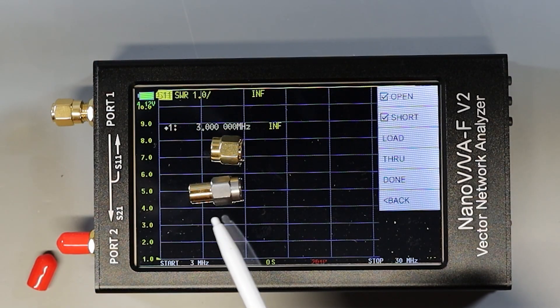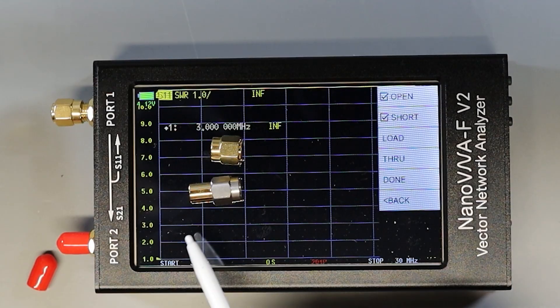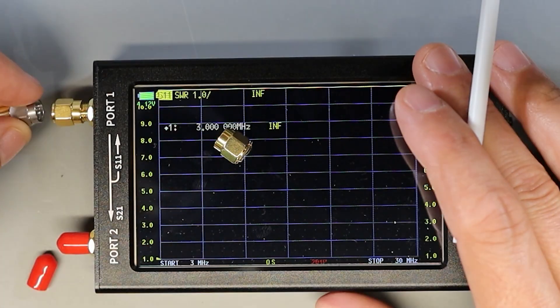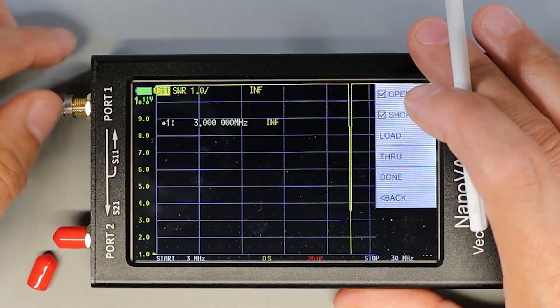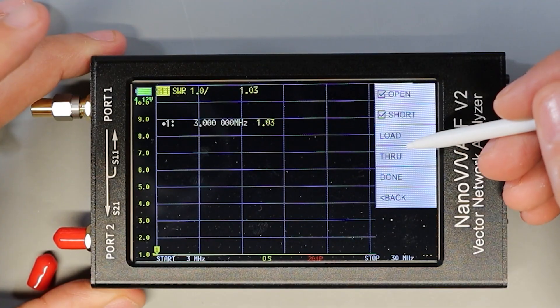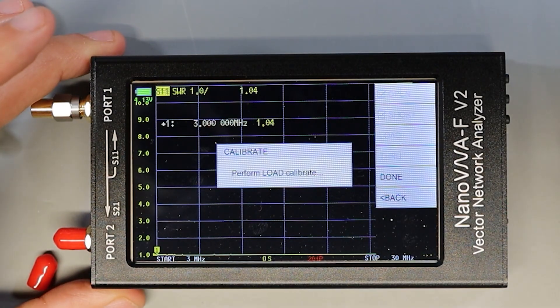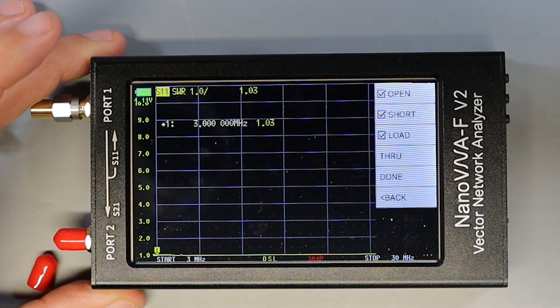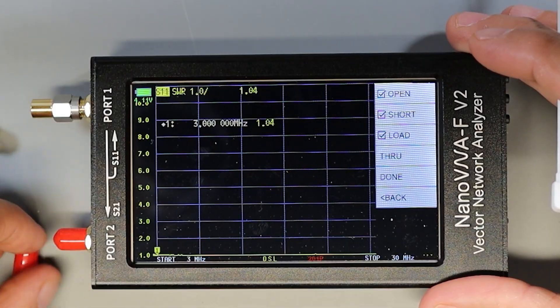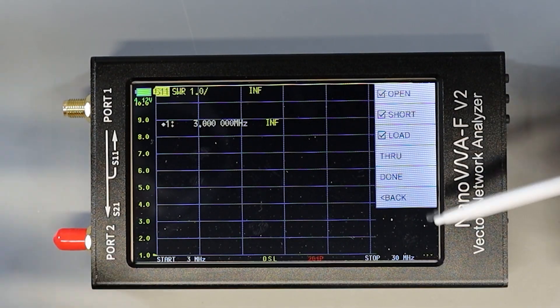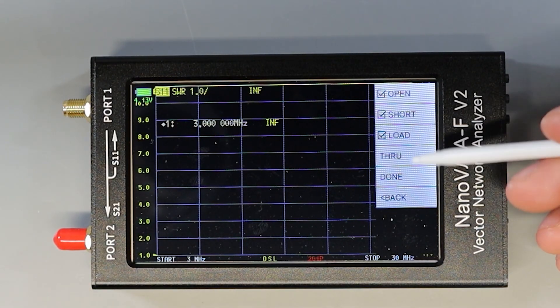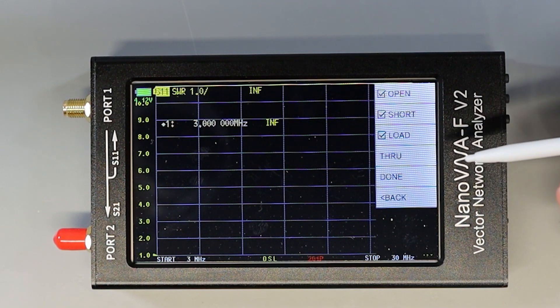In order to do the load calibration I'm going to bring in the bigger slug. This one has a silver connector in a gold body and we're going to put that on port 1 and of course we'll now tap load and that takes care of the load calibration.